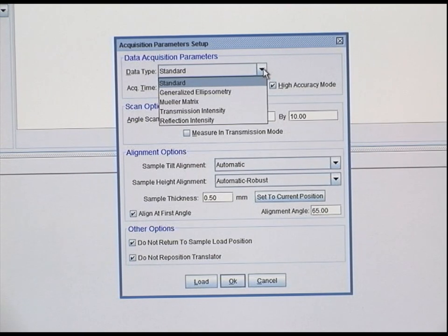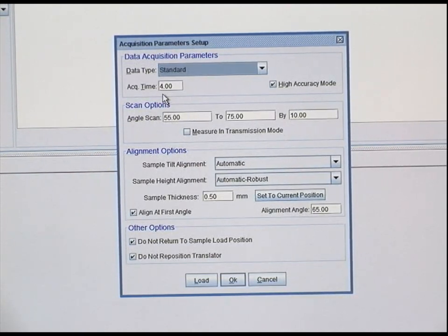This allows us to input our parameters for the measurement. We want a standard measurement with an acquisition time of 4 seconds. This is where we can assign our angles of incidence. We're going to scan at 55 degrees to 75 degrees, increasing by 10 degrees. We have an automatic alignment and automatic quick sample height alignment. It's important to approximate our sample thickness. Since we're measuring a standard glass slide, we're going to start at one millimeter.